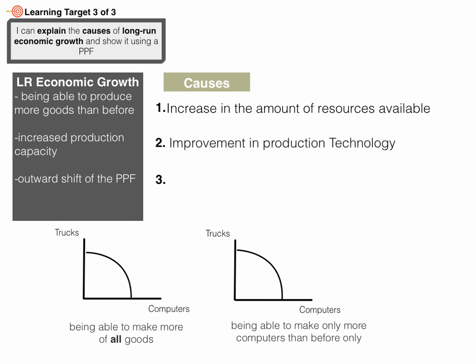The second cause is improvement in production technology. Technology makes production faster, cheaper, and more efficient, and with new technologies you'll be able to produce more goods and services than before. The third cause of long-run economic growth is education. Education is like technology for labor — it improves the human resource so you're able to get more out of it.